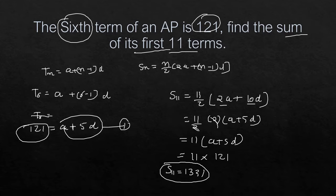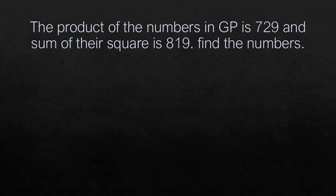To solve such questions, we look at what is available and what we need to find out, then proceed accordingly. Next is a tougher problem: the product of three numbers in GP is 729 and the sum of their squares is 819. Find the numbers.